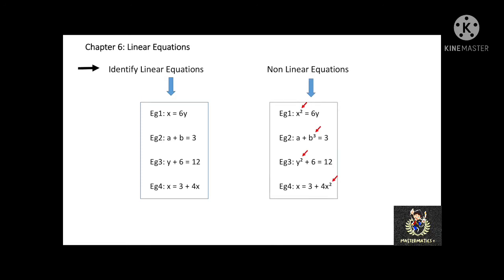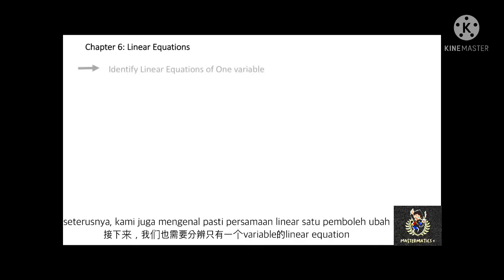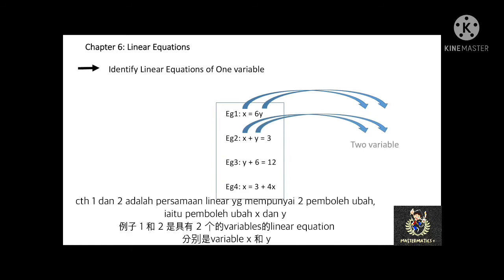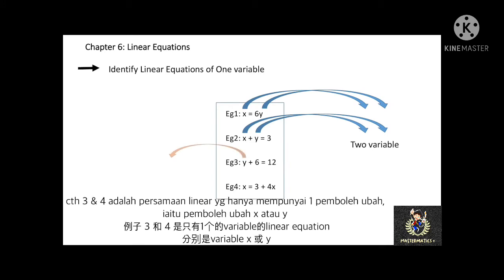Next, we also need to identify linear equations in one variable. A linear equation in one variable is an equation which shows the relationship between numbers on a linear term with one variable. For example, x equal to 6y and x plus y equal to 3 are linear equations with two variables, x and y. In examples 3 and 4, y plus 6 equal to 12 and x equal to 3 plus 4x, there is only one variable x, and the power of the variable is 1. So these are linear equations with one variable.